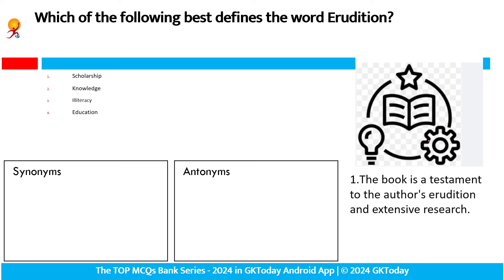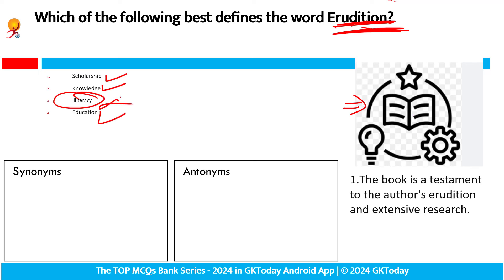Which of the following best defines the word 'erudition'? Erudition ka exactly meaning kya hota hai? Erudition — pride — kya ho sakta hai? Iska matlab innate se aapko kya lagta hai? Knowledge dikha hai, book dikhi hai. So knowledge is the answer — scholarship, knowledge, education. Illiteracy is the antonym. So erudition ka matlab: great knowledge. Great knowledge ke liye ye word hoga.